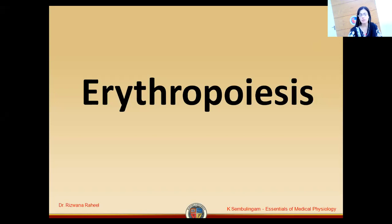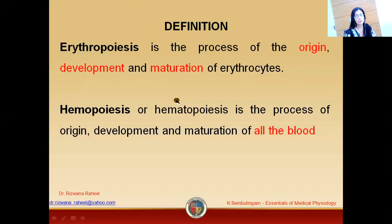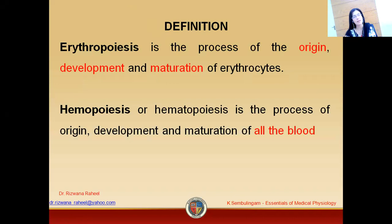What is erythropoiesis? We have already discussed in our previous lectures that erythropoiesis is the process of origin, development and maturation of erythrocytes. Erythrocytes are RBCs, so erythropoiesis is basically the process of formation of RBCs.